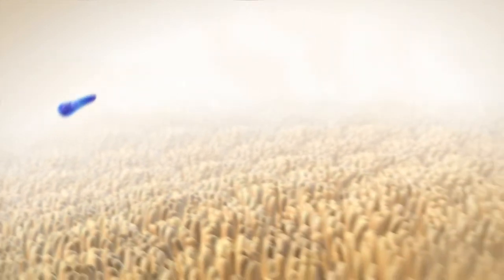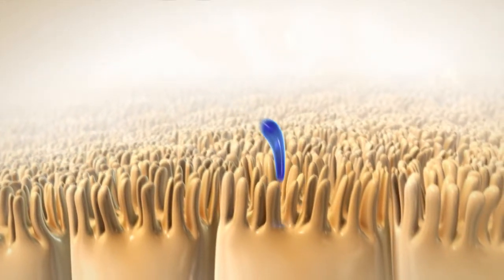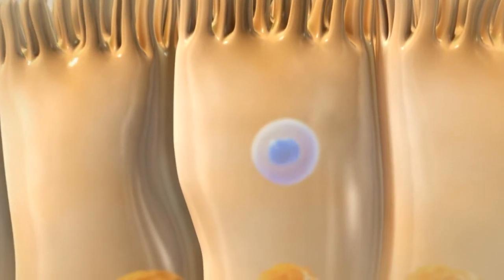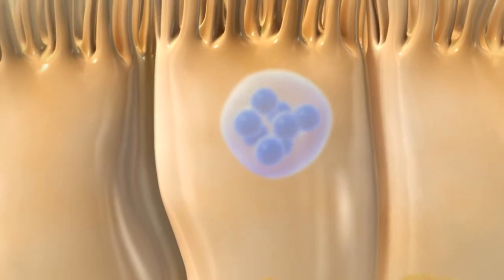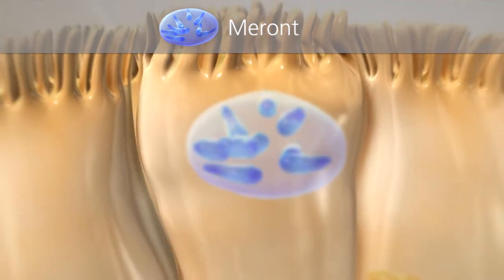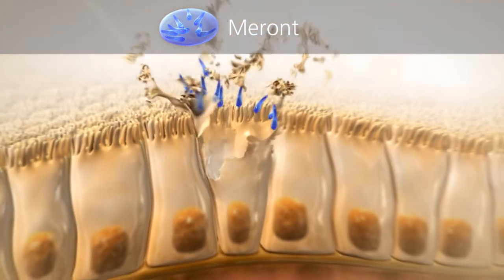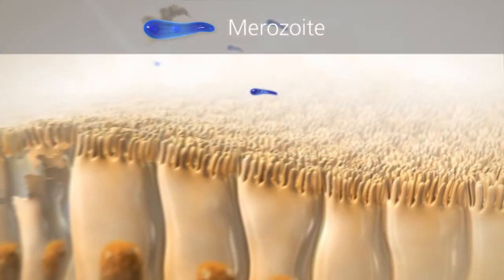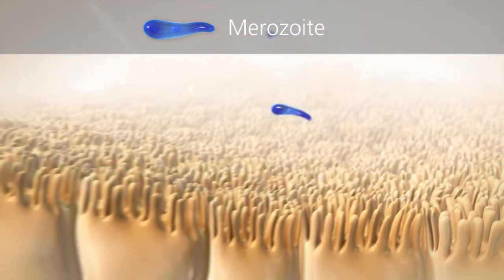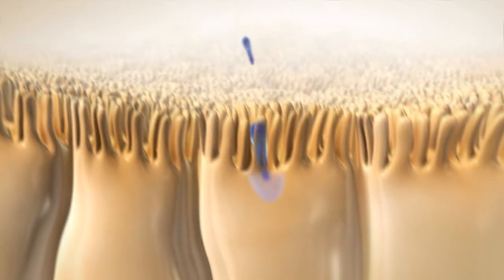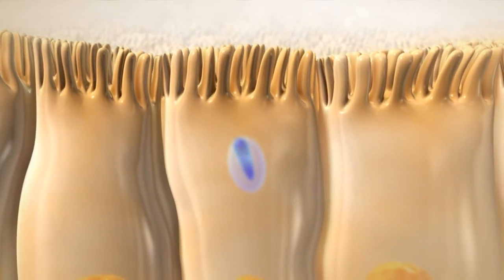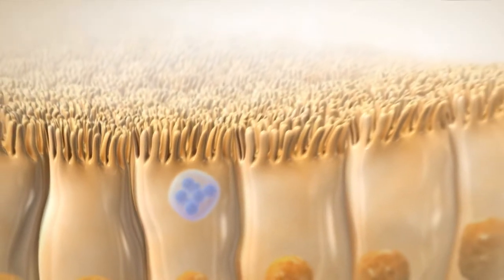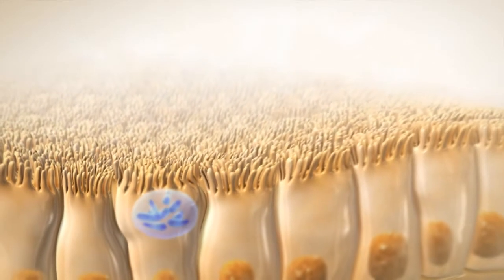The mobile sporozoites then invade the epithelial cells of the intestinal wall. Once inside the cell, the sporozoite undergoes various changes. In the end, the epithelial cell bursts and hundreds of newly formed merozoites reach the intestinal lumen. These now invade neighboring epithelial cells and the whole process of asexual multiplication is repeated two to four times.